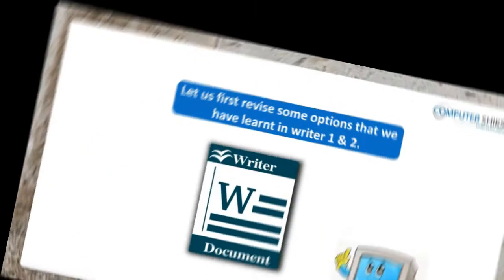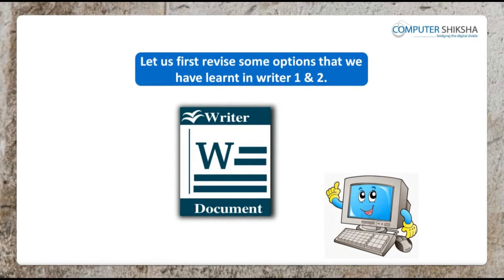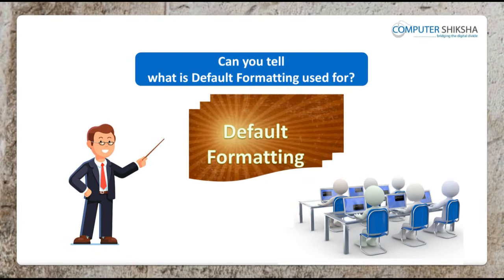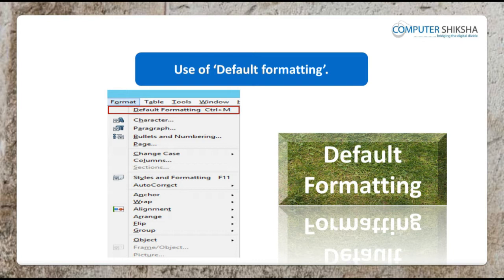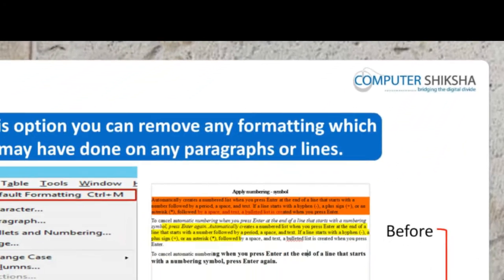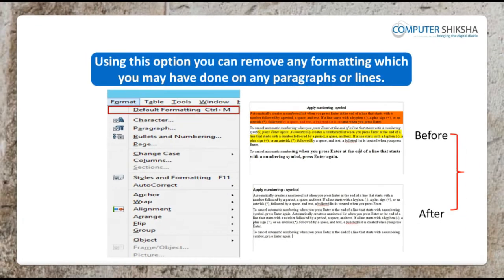Let us first revise some options that we have learnt in Writer 1 and 2. Can you tell what is default formatting used for? Default formatting is an option using which you can remove any formatting that you may have done on your paragraph or text and bring it back to the normal view.